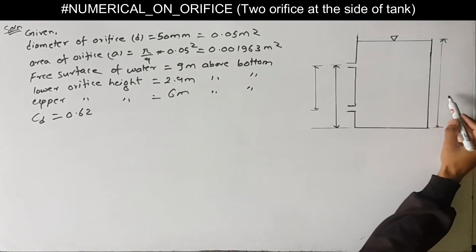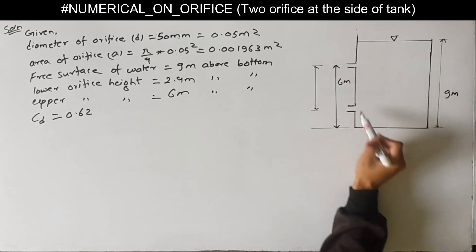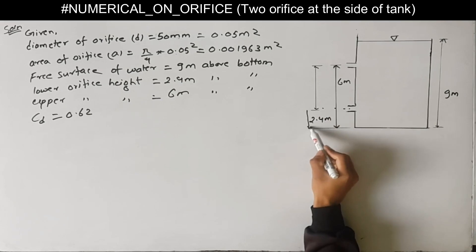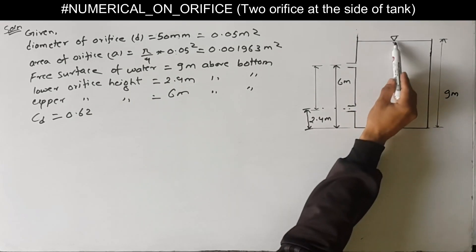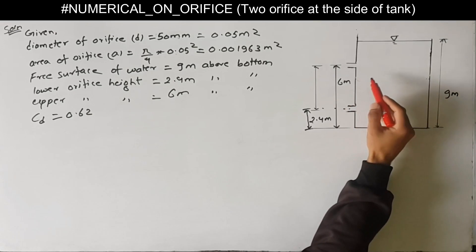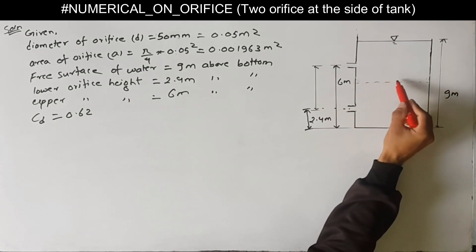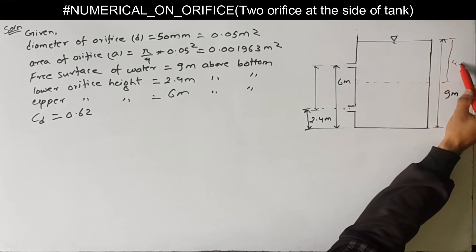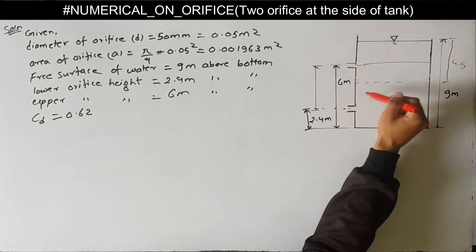The free surface is 9m above the bottom of the tank. The upper orifice is 6m above the bottom, and the lower orifice is 2.4m above the bottom. We have to find the time to fall the level of water from this free surface to 4.5m below the free surface. We label the positions on the diagram with letters A, B at the top, and C, D at the center of the upper orifice.